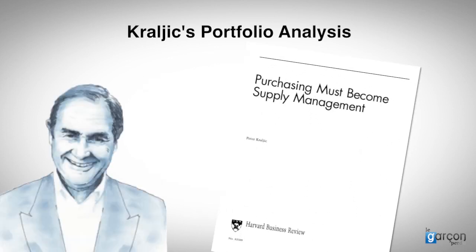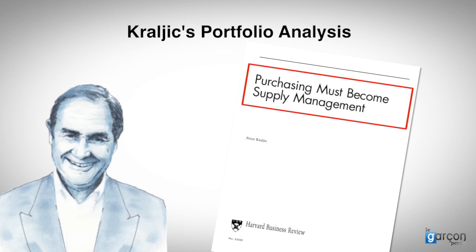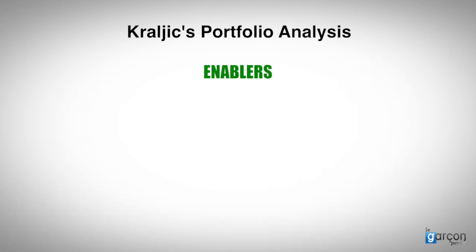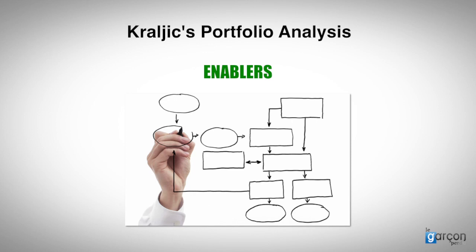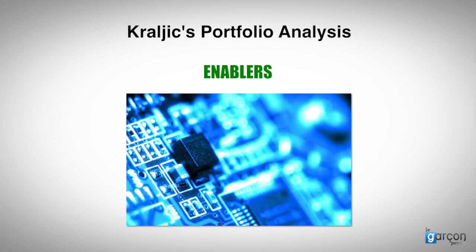Kralich finished his article by addressing a number of prerequisites to make change happen. Remember, he called the article 'Purchasing must become supply management,' and the journey required a number of enablers. People: procurement people have to be entrepreneurial and able to influence key decision makers, both inside and outside their own organisation, and coordinate others. Process: the procurement process must be flexible enough to allow coordination of key strategies, and create a portfolio of strategies, not a series of deals. Technology: the information provided to the procurement department needs to be reliable, and allow early involvement of procurement thinking in major projects.